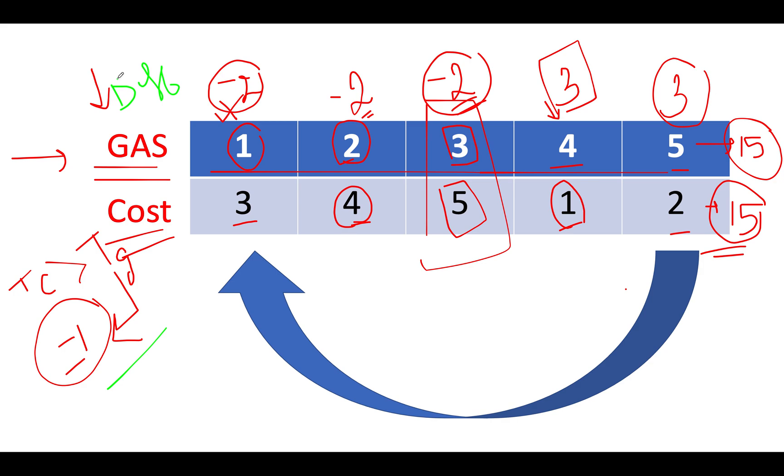So it's pretty simple and straightforward. You calculate the difference array. Then you check whether the current value happens to be negative in nature. So in case it's negative, then definitely you are not going to start your journey from there. Let's walk through the same example. What do we see? We see that it's negative in nature. Let's skip it. It can't be the starting point. Let's proceed ahead.